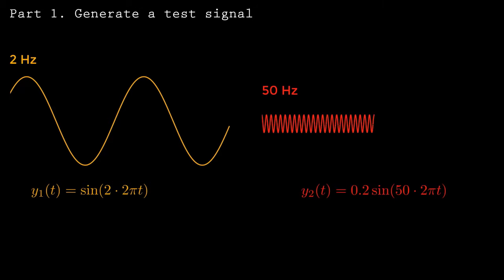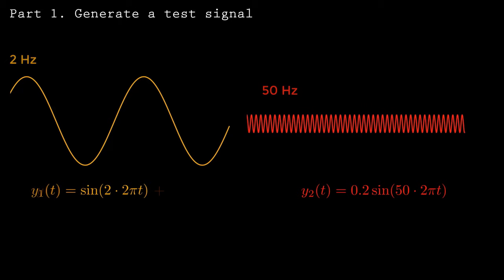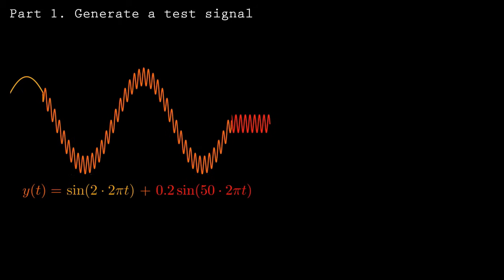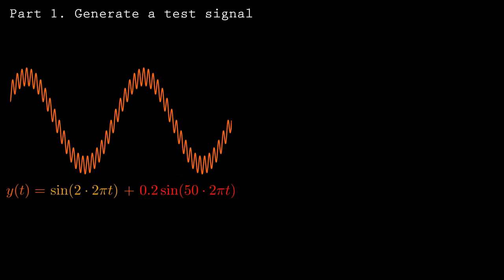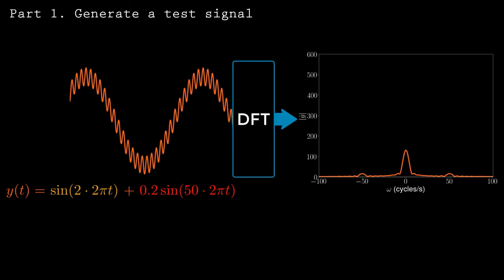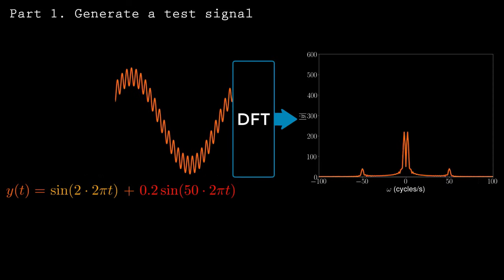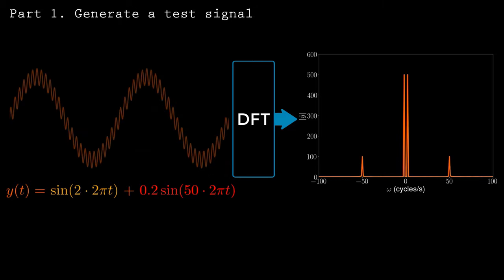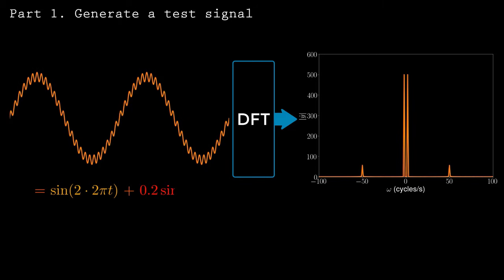I'll represent the fundamental component of the signal with a 2 Hz sine wave. To represent the unwanted noise, I'll add a 50 Hz sine wave. The discrete Fourier transform, or DFT, offers another way to look at the signal. Each sine curve shows up as a peak in the Fourier domain.